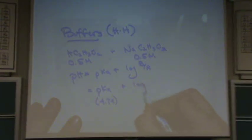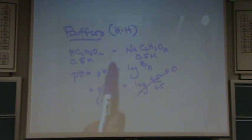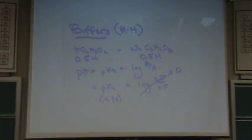Plus the log of the base, 0.5, over the acid, 0.5. What's the log of 1? Zero. So pH is going to be equal to pKa in this example. The pH is 4.74.